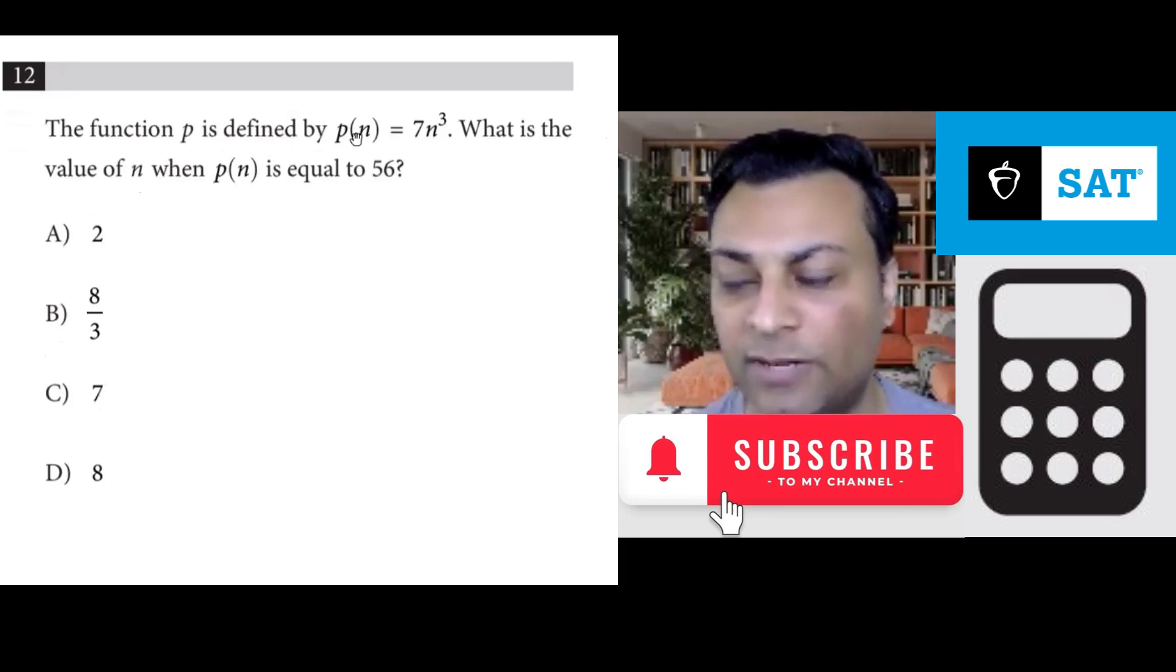Question 12 says the function p is defined by p(n) = 7n³. What is the value of n when p(n) is equal to 56? So what they're saying is this whole left side will turn into 56. So you have 56 = 7n³.